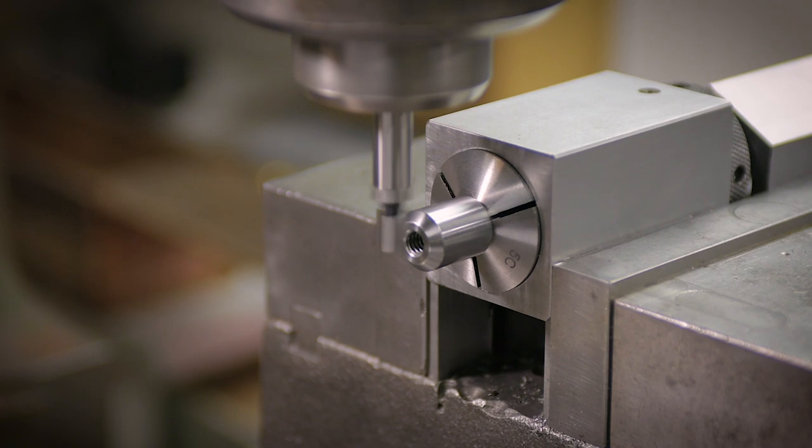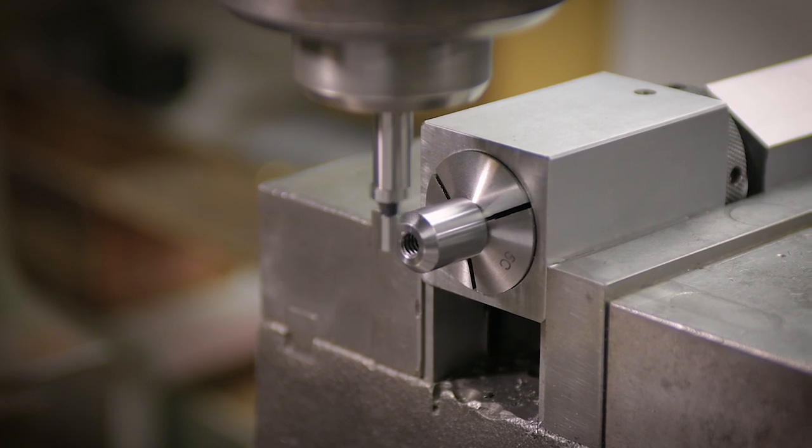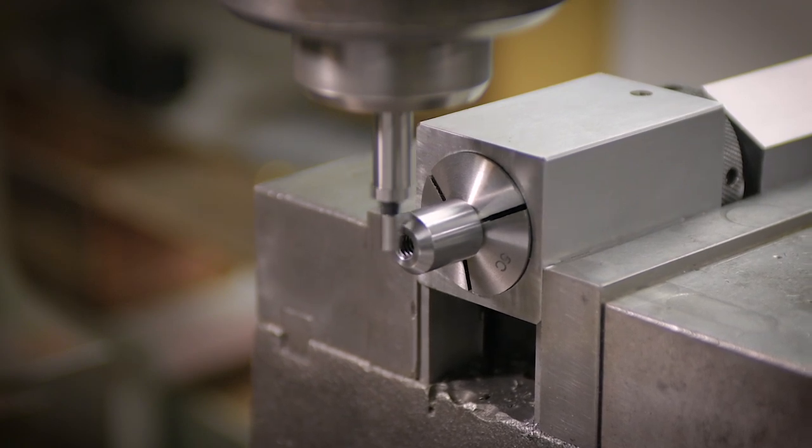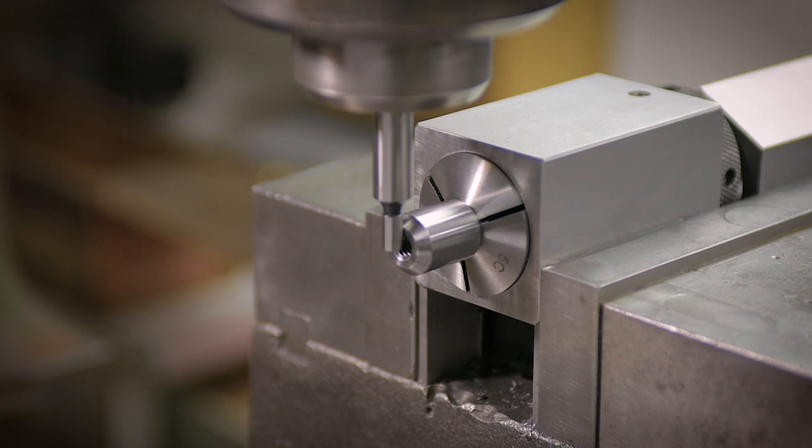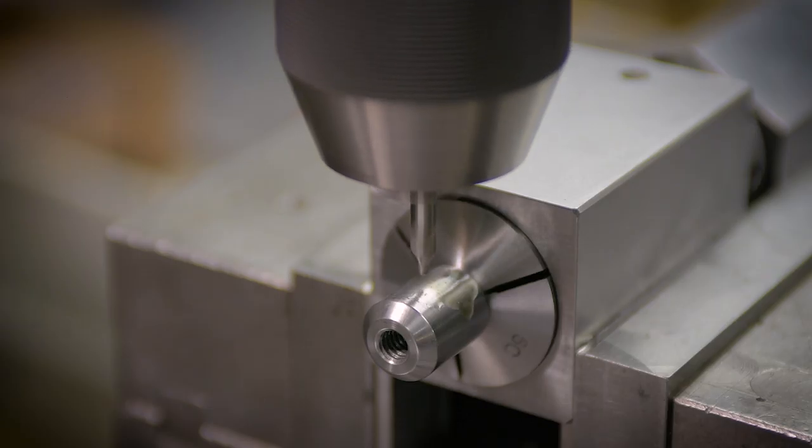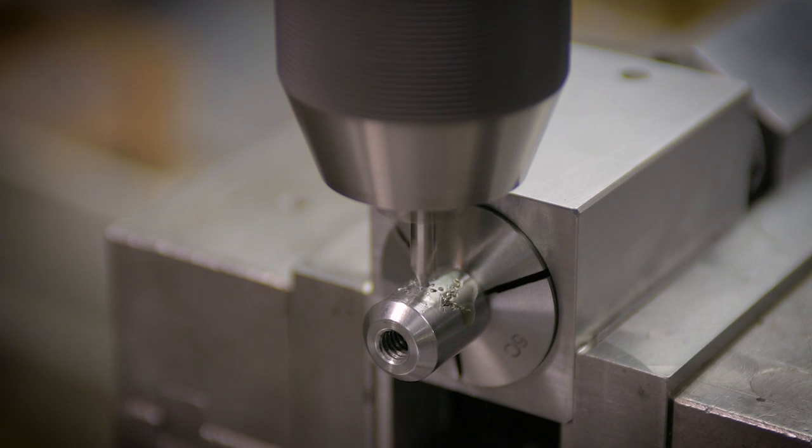Another advantage to using this collet block is that even though I flipped the part around, my y-axis is still zeroed. So I just need to use the edge finder to find the end of the part, which would give me my new X position. I'm going to be drilling the hole for the crossbar to go through. And my drawing specifies how far down that hole is from the top of the part. So if I have that location, then I can move the proper distance.